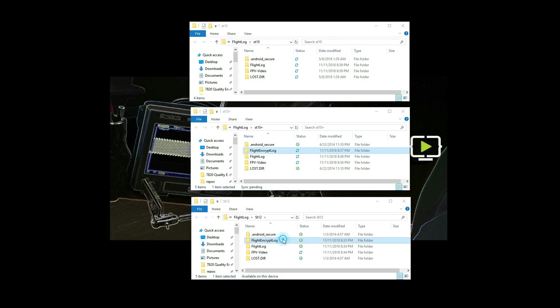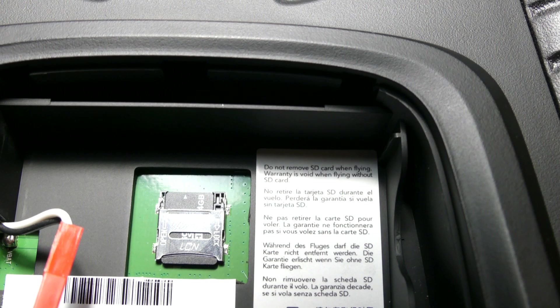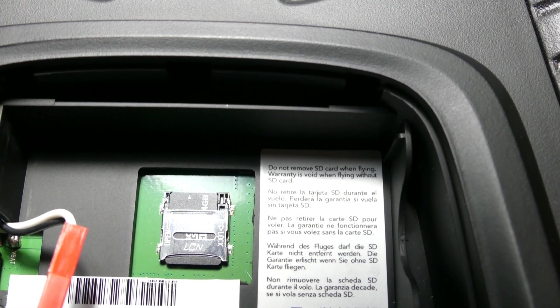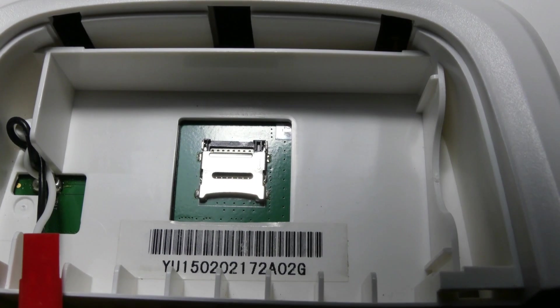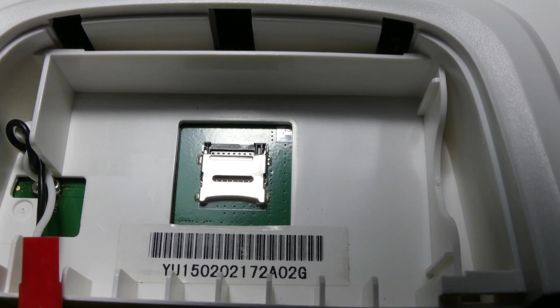Here I have all the data from the ST10, 10+, and ST12. The only difference I see is the ST10 does not have a flight encrypted log, and that might be because the new controllers have a warning on the back that says do not remove SD card when flying, warranty is void when flying without SD card. But the white controller does not have this.